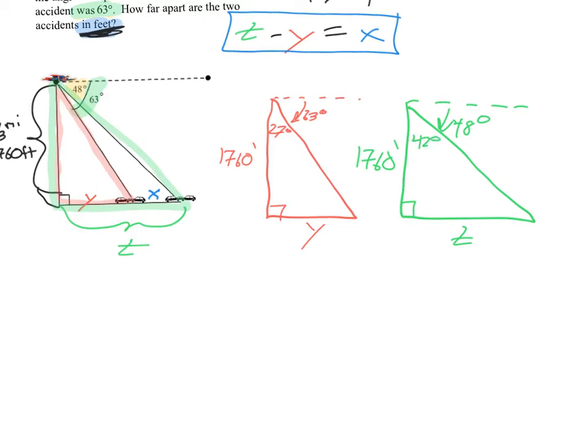Remember, all we're trying to do is find out y, find out t, and then we could just do t minus y, and that'll equal x. So let's find out y. Well, if you think about it, I have an angle. I'm trying to find the opposite side. And I have the adjacent side. So what trig function uses the opposite and the adjacent? That's tangent. So let's go ahead and go to our tangent equation. It's tangent 27 equals the opposite, which we know is y, over the adjacent, which we know is 1,760.